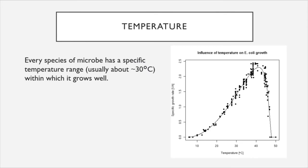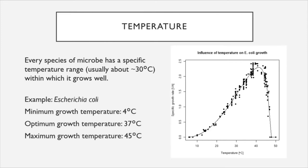Every species of microbe has a specific temperature range within which it grows well, and that range usually spans about 30 degrees Celsius from the minimum to the maximum growth temperature. For example, Escherichia coli has a minimum growth temperature of four degrees Celsius, after which point no growth is observed, and a maximum growth temperature of 45 degrees Celsius, after which growth rapidly decreases as the temperature gets too high for the cell's enzymes to function. The optimal growth temperature for E. coli sits at 37 degrees Celsius.